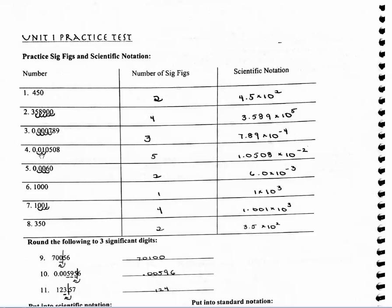For number 4, these two zeros are not significant; however the rest of the zeros are, because once I start counting I can count zeros. So I have 5 significant figures. I've moved my decimal place over 2 places to make a small number larger, and so my exponent is going to be negative 2.